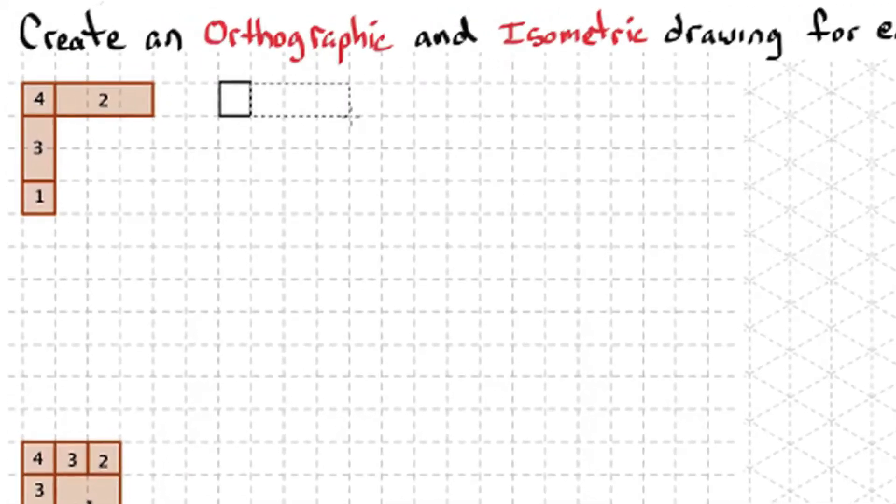In order to do an orthographic drawing, we need the three views: the top view, the front view, and the right side view.